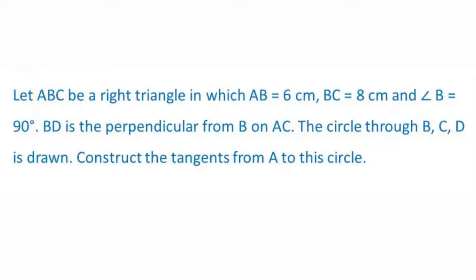Let ABC be a right triangle in which AB is equal to 6 cm, BC is equal to 8 cm, and angle B is equal to 90 degrees. BD is the perpendicular from B on AC. The circle through B, C, D is drawn. Construct the tangents from A to this circle.